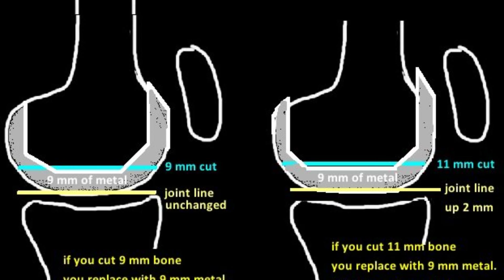In contrast, if you take extra bone from the tibia — say 11 mm — you can insert a bigger poly, such as 11 mm instead of 9 mm, and the joint line is not affected. The difference is that there are many sizes of poly, but only one size for the distal femoral condyle of the implant: 9 mm. Some surgeons will also take less than 9 mm from the distal femoral cut. If there is significant bone loss, taking less bone will restore the normal joint line. If there is pre-existing patella baja — where the joint line is too high relative to the patella — taking 7 mm of bone and adding 9 mm of metal will lower the joint line by 2 mm.